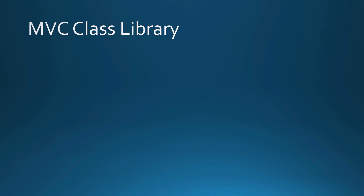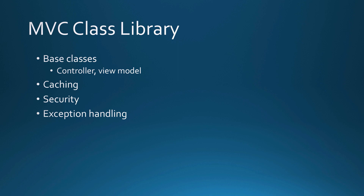That was an example of a common library. In an MVC class library, I might have base classes for a controller and a view model — that view model base class would probably inherit from the one in my common library and add things specific to MVC. I might also have a caching class, a security class, an exception handling class, a session handling class, a view state handling class, and many others.